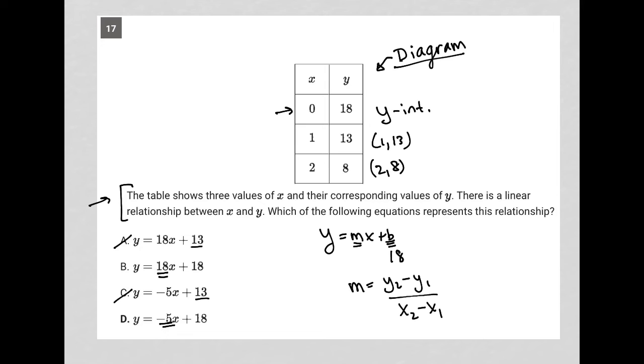these values that I've already written here. So I'm going to call that my x1 and y1 and call this one my x2 and y2. So y2 minus y1 would equal 8 minus 13, and x2 minus x1 would be 2 minus 1. 8 minus 13 is negative 5. 2 minus 1 is 1. So negative 5 over 1 is just negative 5.